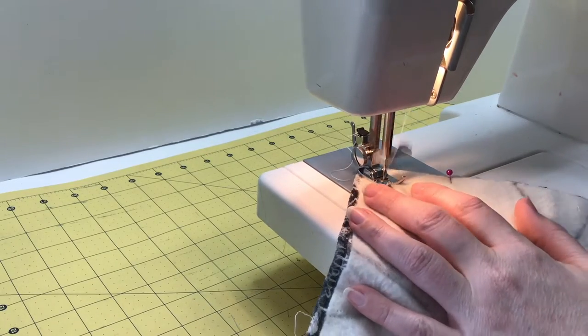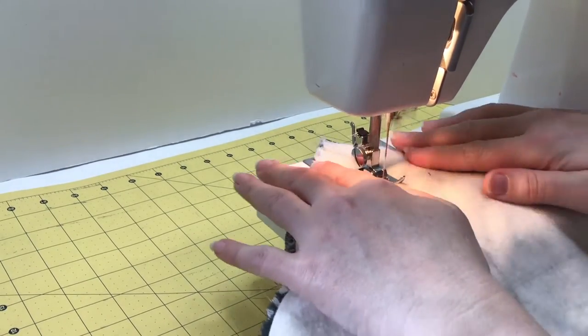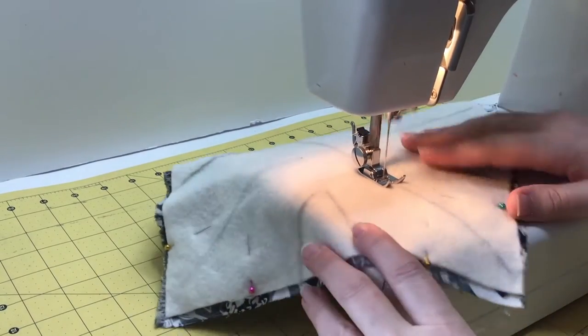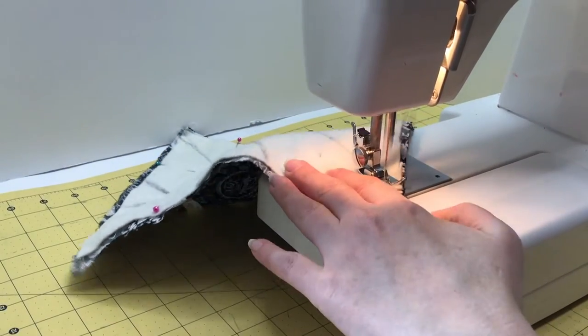Stitch across the squares diagonally along the lines you drew. Repeat steps three through six for the other square of fabric and batting.